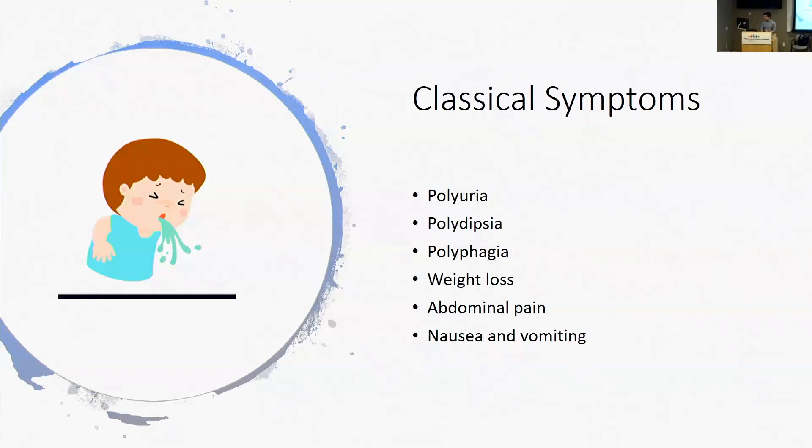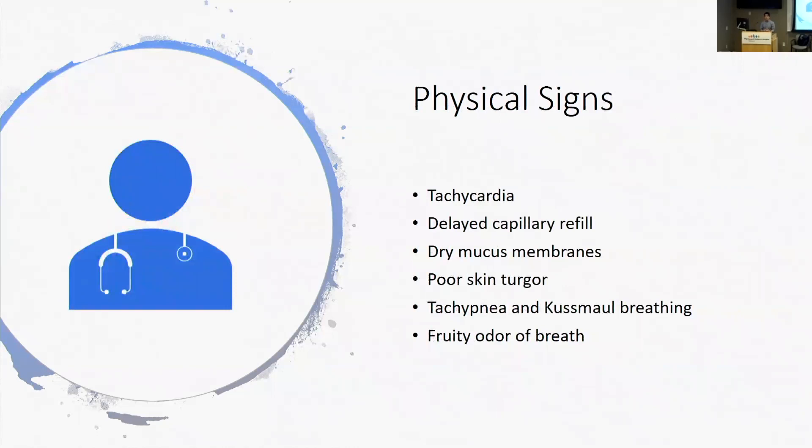Classic physical signs include signs of dehydration: tachycardia, delayed cap refill, dry mucous membranes, and skin tenting. More specific to DKA are tachypnea, Kussmaul breathing, and the fruity odor of breath which comes from acetone production.